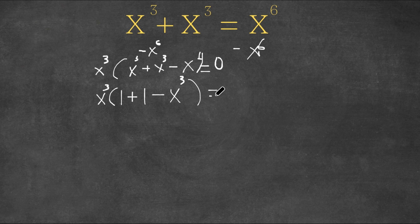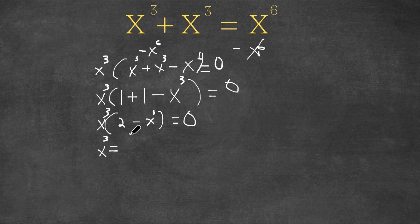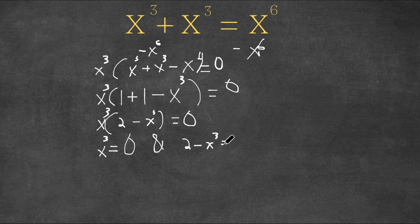So now we have x to the power of 3 times 1 plus 1, which is 2, minus x to the power of 3 equals 0. Now we can turn this into two equations: x to the power of 3 equals 0, and 2 minus x to the power of 3 equals 0.